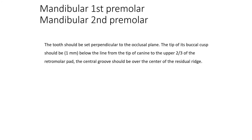The canine tip will touch the occlusal plane. The retromolar premolar will be 1 mm from the tip of the canine up to the upper two-thirds of the retromolar pad area. The central groove should be over the center of the retromolar pad, which is the line we established in the region posteriorly.